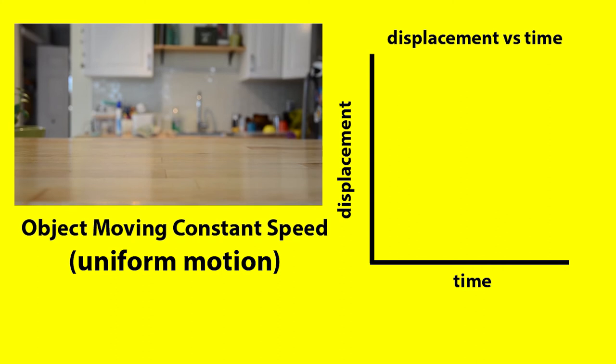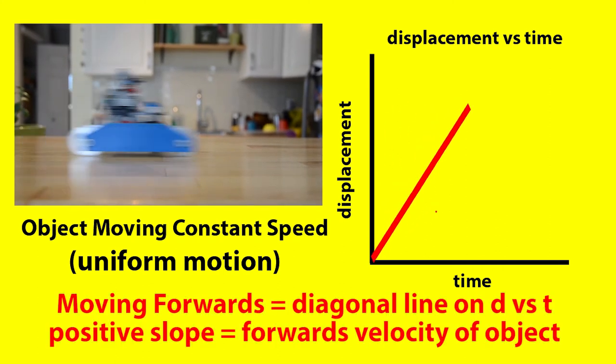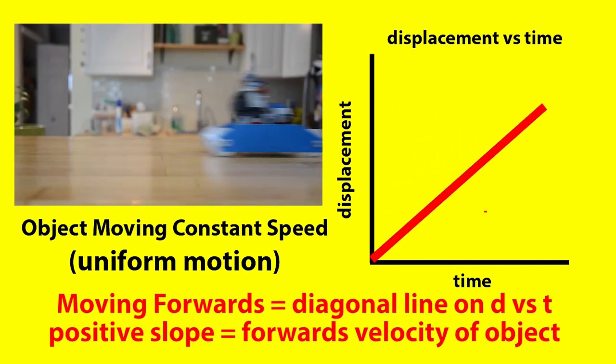What about an object moving forwards? So an object moving forwards on a displacement versus time graph is going to make a nice diagonal line. The slope of that line is how fast the object's going.